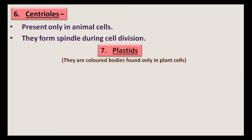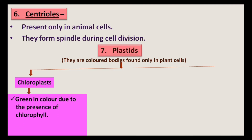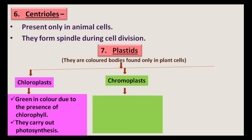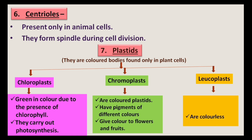Plastids are colored bodies found only in plant cells. They are of three types: Chloroplasts, Chromoplasts, and Leucoplasts. Chloroplasts are green due to the presence of chlorophyll and carry out photosynthesis. Chromoplasts are colored plastids that have pigments of different colors other than green, giving color to flowers and fruits. Leucoplasts are colorless plastids that store starch, proteins, and fats.